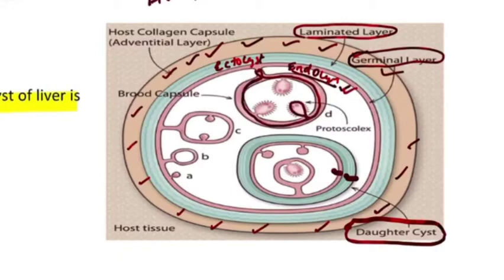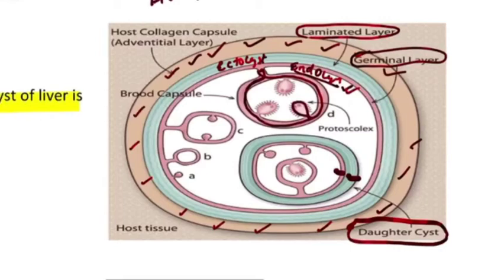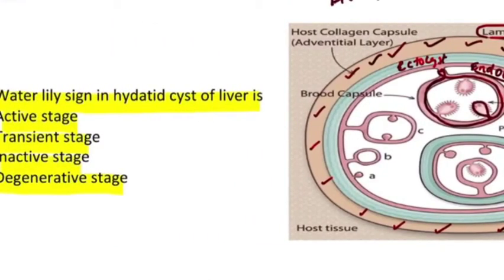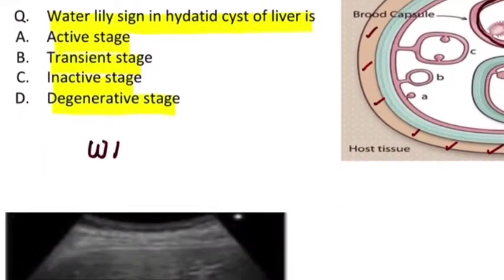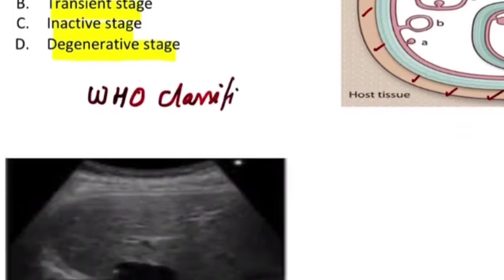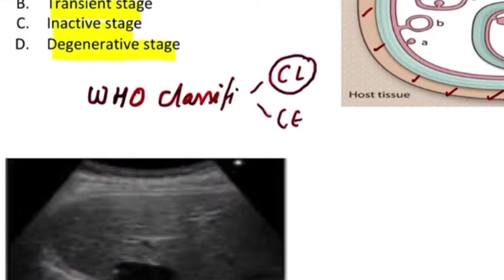With this basic knowledge, let's proceed towards the classification of the hydatid cyst of liver given by the WHO. The classification is CL and CE — CL stands for cystic lesion, while CE stands for cystic echinococcus.